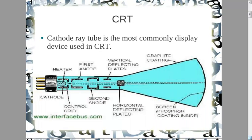The CRT, also known as cathode ray tube, is an evacuated glass tube. It is made up of a cathode — this is why we call it a cathode ray tube — and this cathode has a filament inside it. When current passes through that filament it's going to heat it. We have two anodes and a special part known as the control grid, then vertical and horizontal deflecting plates, and a phosphor-coated screen with a graphite coating on top.